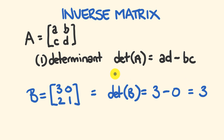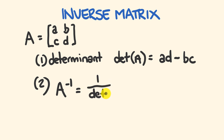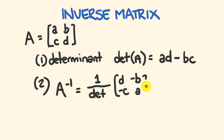It's worth noting that if the determinant equals zero, the matrix does not have an inverse. The second step is to directly work out the inverse. The inverse of A equals one over the determinant, multiplied by the matrix where D goes to the top left, negative B to the top right, negative C to the bottom left, and A to the bottom right. So A and D swap positions and B and C just become negatives. Multiply by one over the determinant, and you have your inverse matrix.